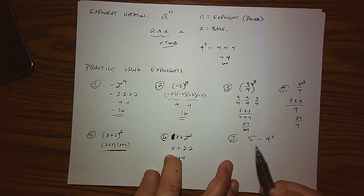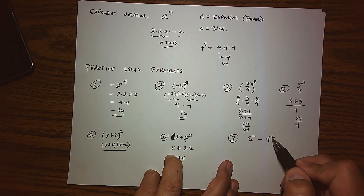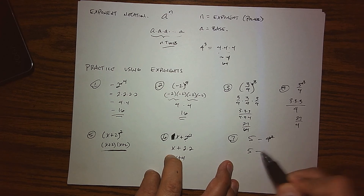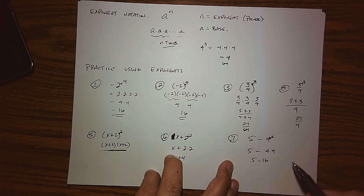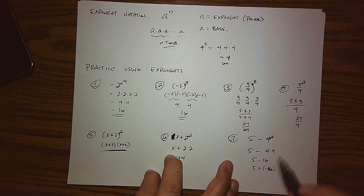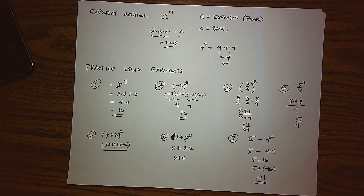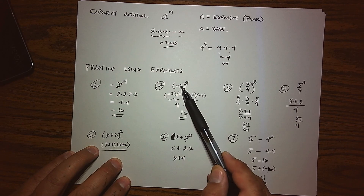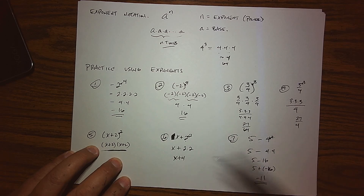For the last problem, we read this as 5 minus 4 squared. The base is 4, because the exponent is sitting right on top of the 4. So we have 5 minus 4 times 4, which becomes 5 minus 16. As we learned, subtraction is the addition of an opposite — 16 takes away 5, giving us an answer of negative 11. The exponent always sits right on top of the base, so make sure you're clear on what that base is, because misinterpreting it leads to very different results.